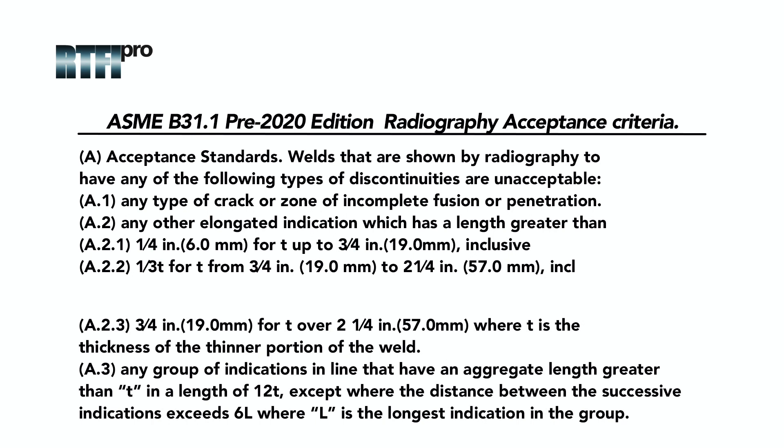Here you will see the acceptance criteria for ASME B31.1, paragraph 136.4.5, Acceptance Standards. Welds that are shown by radiography to have any of the following types of discontinuities are unacceptable.